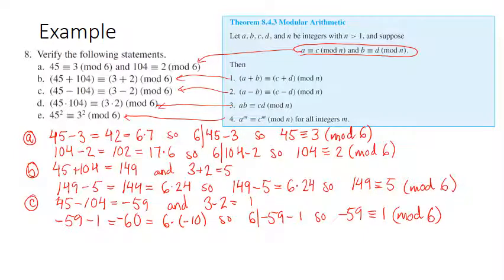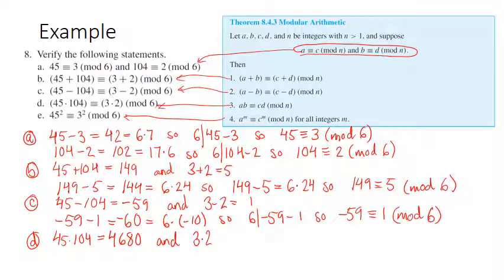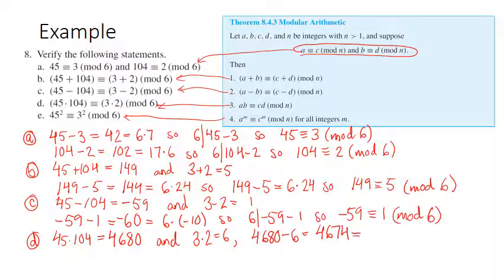For part D, multiplying: 45 times 104 is 4,680. And 3 times 2 is 6. Then 4,680 minus 6 is 4,674, which factors as 6 times 779. So 6 does divide this difference, meaning 4,680 is congruent to 6 mod 6.